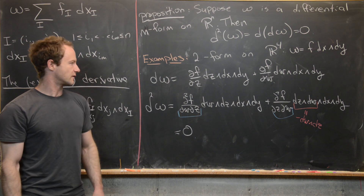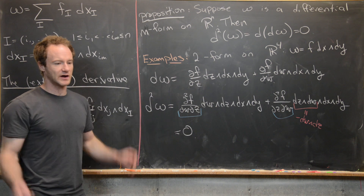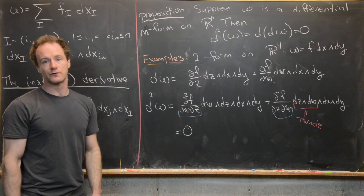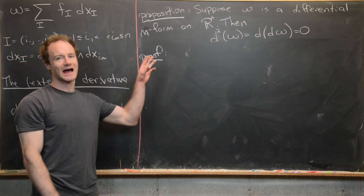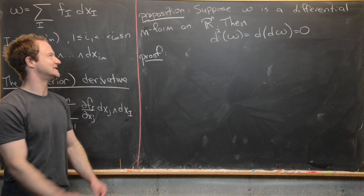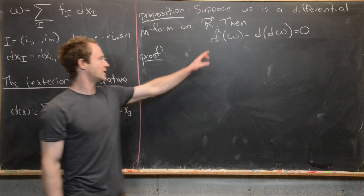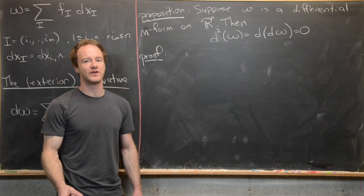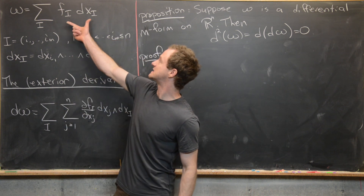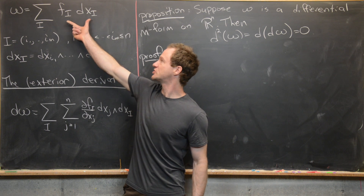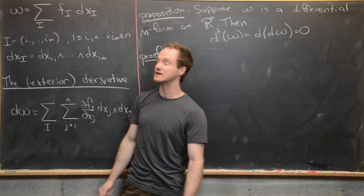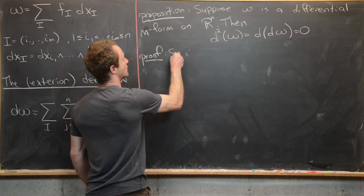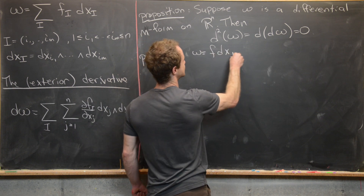We did the example of a 0-form on R^4 and a 2-form on R^4. Now we do the general proof. If omega is a differential m-form on R^n and we apply the exterior derivative operator twice, we necessarily get zero. Since the exterior derivative is a linear operator, we only need to consider its action on one component. So we set omega equal to f dx_i, where f is a function of n variables and dx_i is dx_{i1} wedge all the way up to dx_{im}.